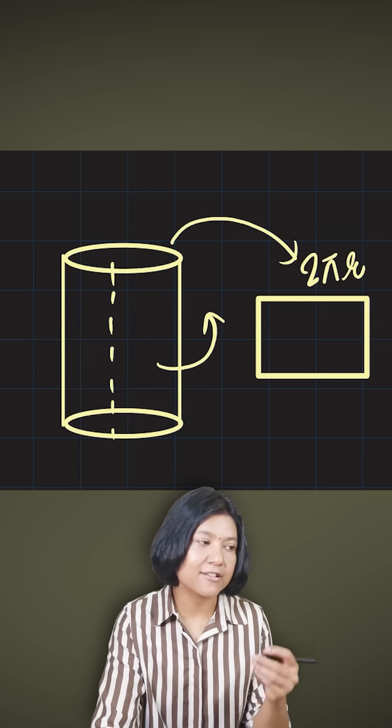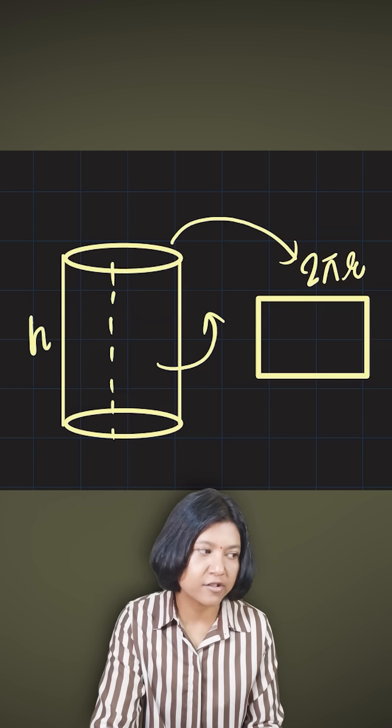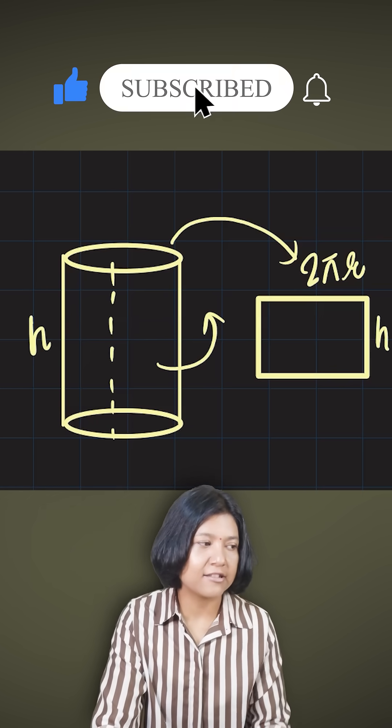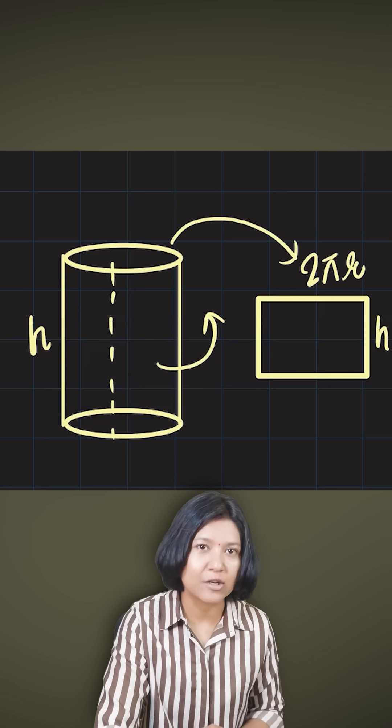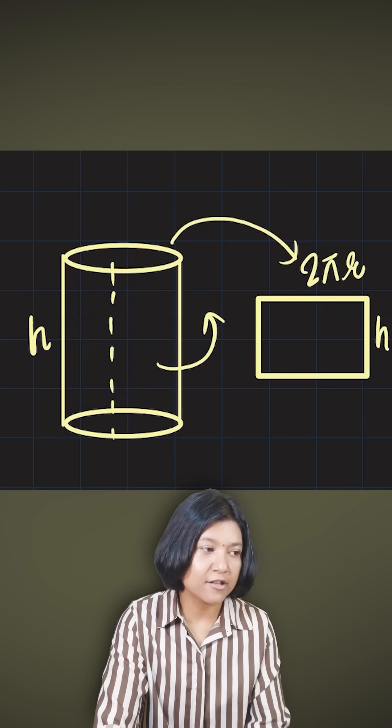Hence the length here has to be 2πr and this here is the height of the cylinder, giving me that the curved surface area is actually equal to the area of the rectangle which I have formed here.